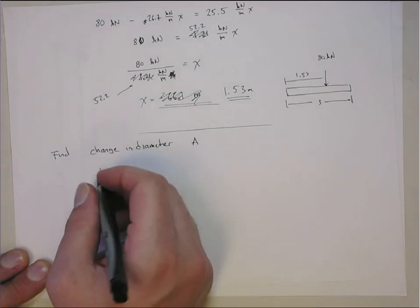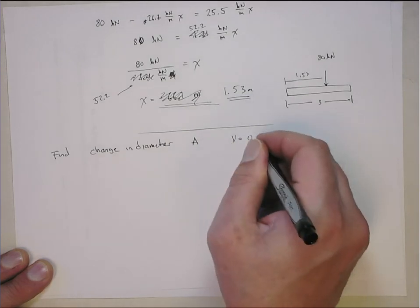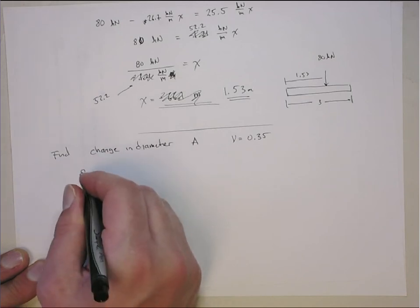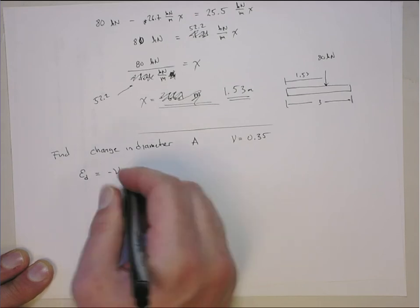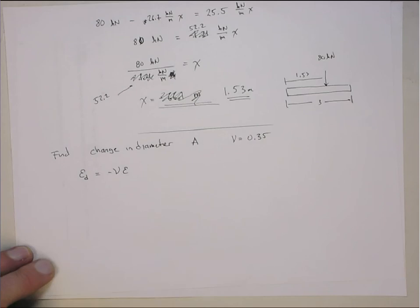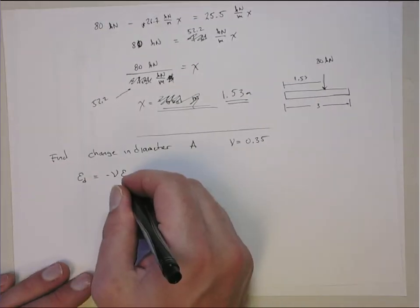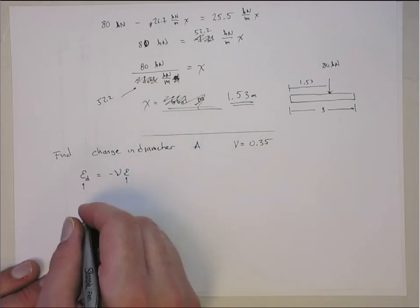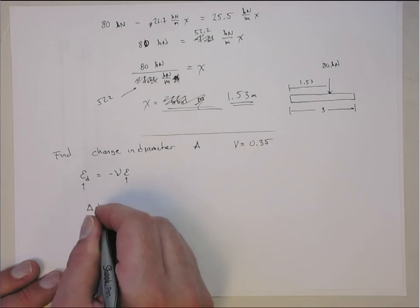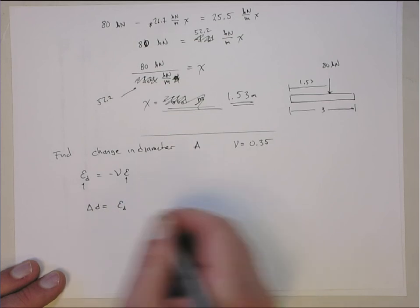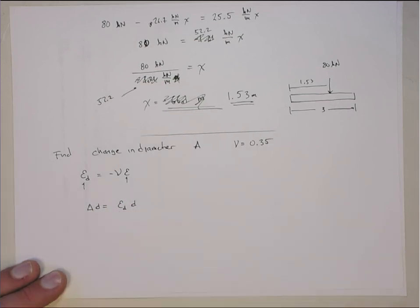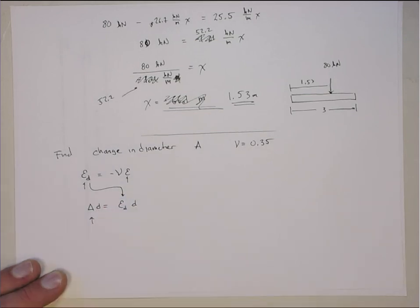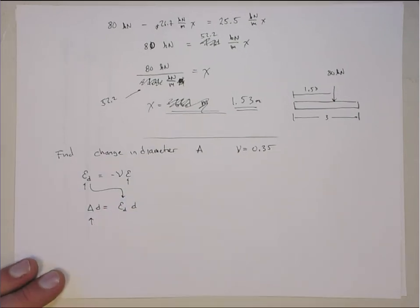So to find the change in diameter of A, and it tells you for aluminum Poisson's ratio is 0.35. So the change in diameter, well, the diametric strain is equal to minus the Poisson's ratio times the longitudinal strain. So we will have to go and find this in element A. Then we'll be able to find this. And then using that, we can get that the change in the diameter is equal to the diametric strain times the original diameter. So we take this, I'm going to solve for this, put it into here, and that will give us the answer for the change in diameter. And I'll just do A. B goes the same way.